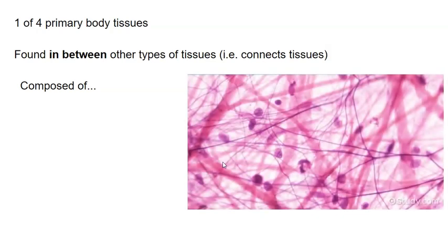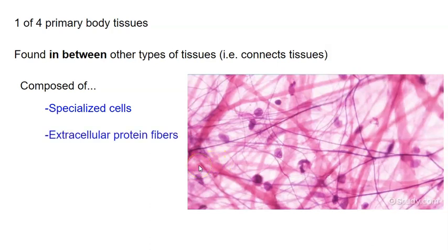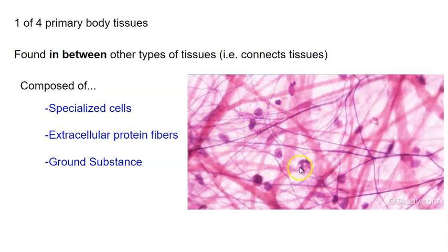Connective tissue is composed of three things: specialized cells, extracellular protein fibers, and something called ground substance. The large pink or purplish and dark purple areas on the slide are fibers. The things that look like cells are cells — the nuclei of cells, or in some cases the full cell itself. The ground substance is the void or space in between the fibers and the cells.